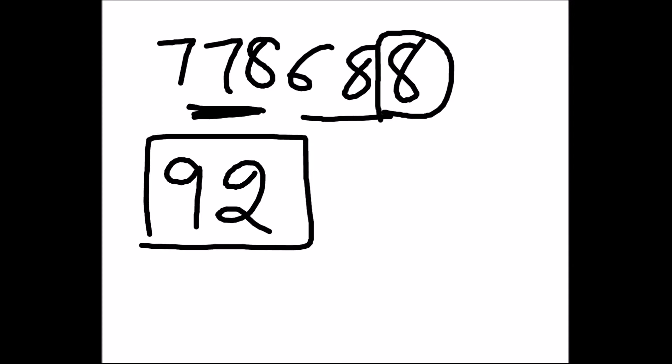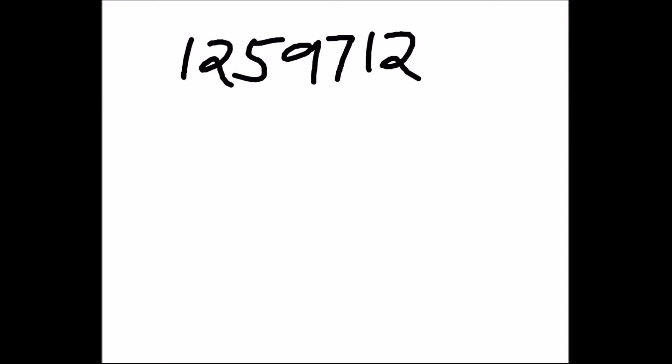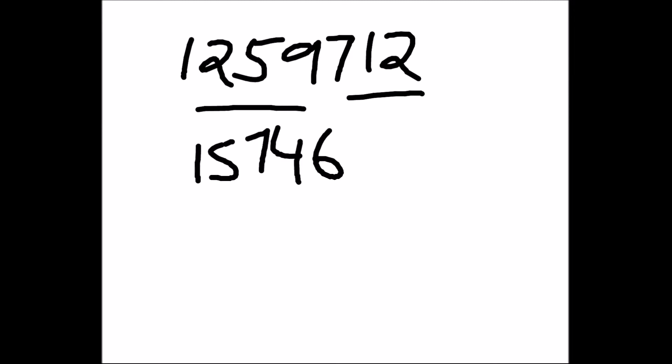Now let us see a more complicated problem — find the cube root of 1259712. I'll divide it into two parts. We know cubes only up to 10, but 1259 is larger than 1000 (10 cubed), so we need a different approach. We will divide the entire number by the least perfect cube we know, which is 2 cubed = 8. Dividing 1259712 by 8 gives us 157464.